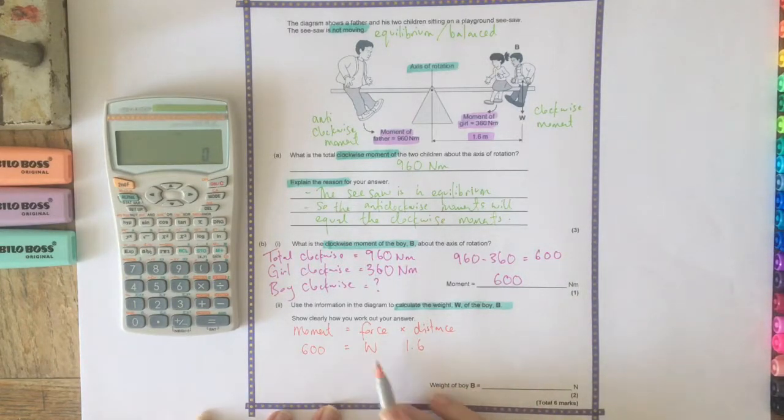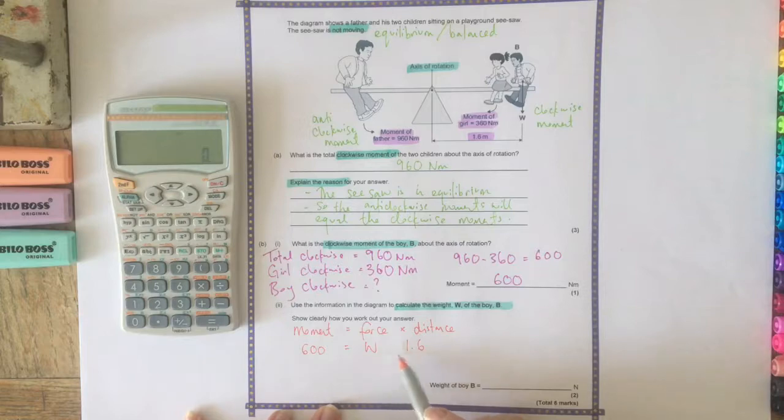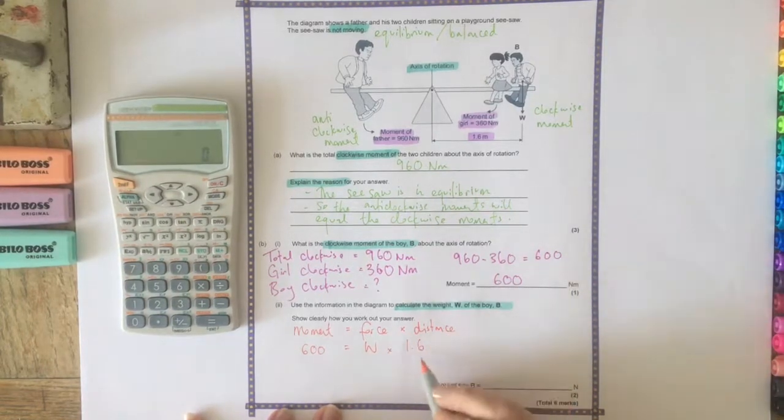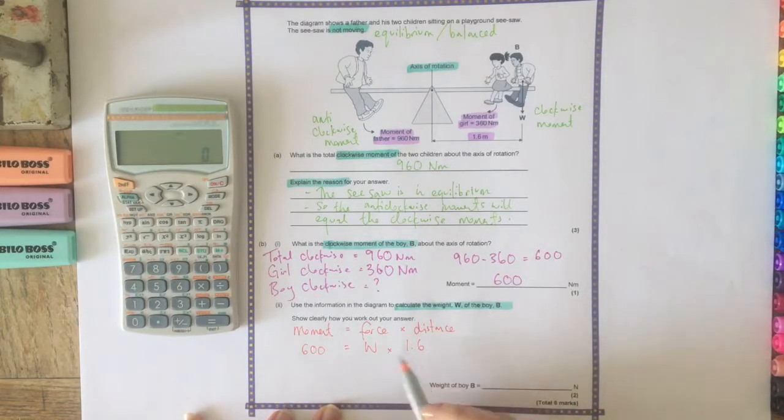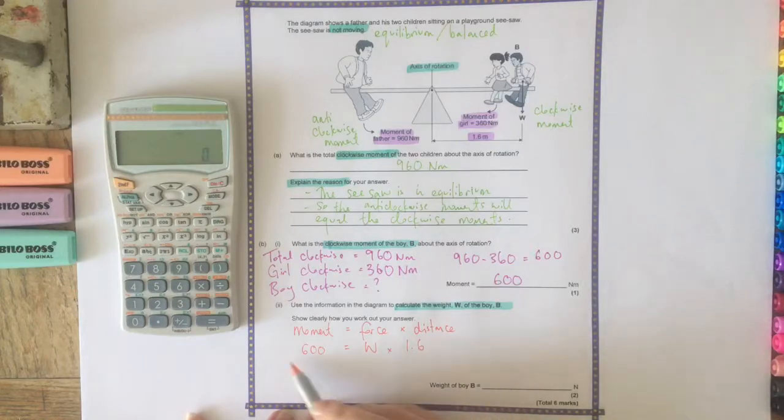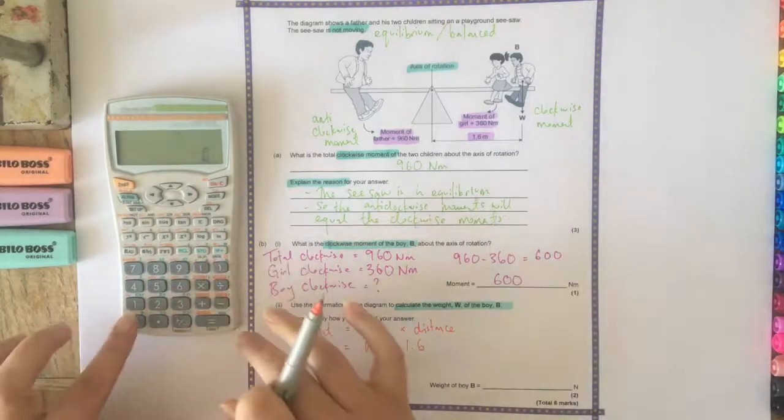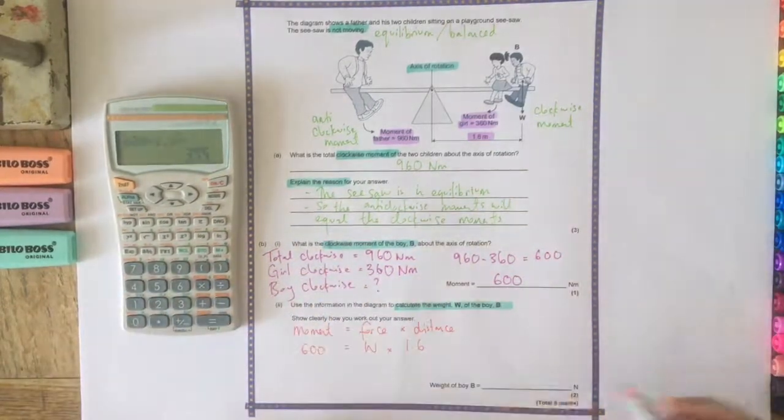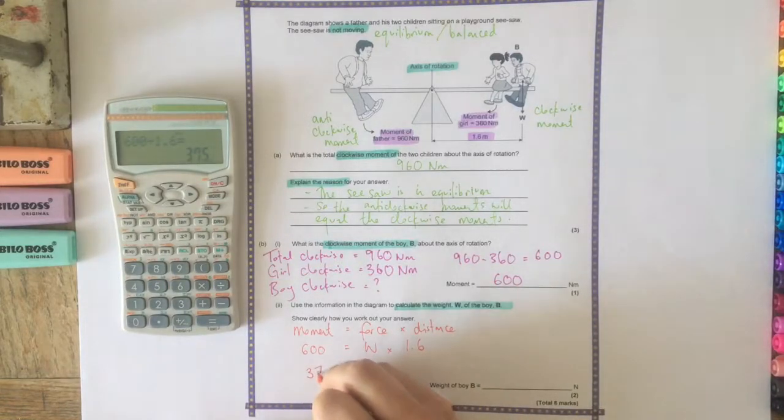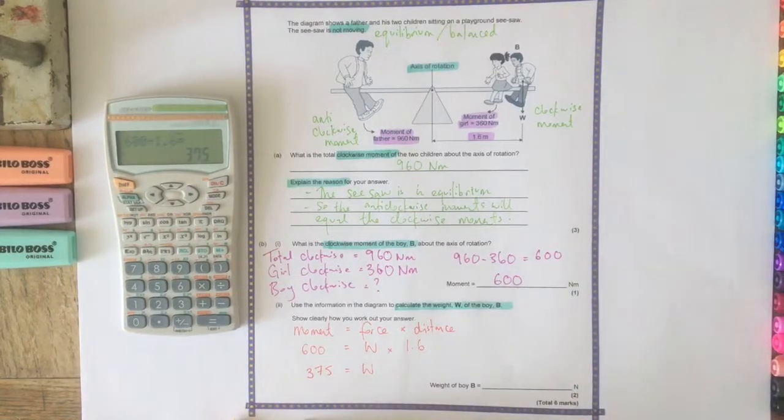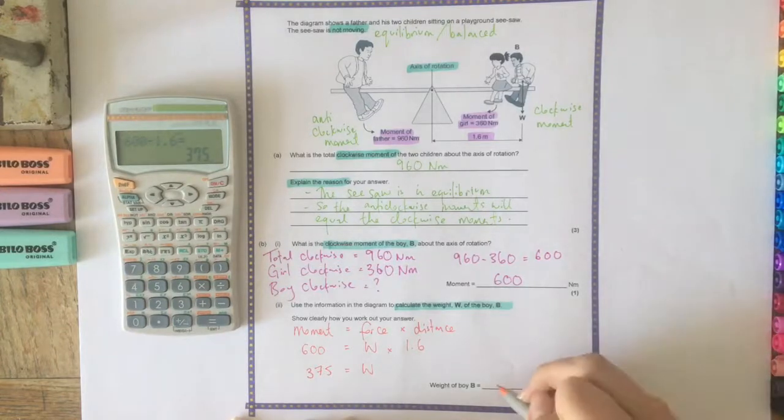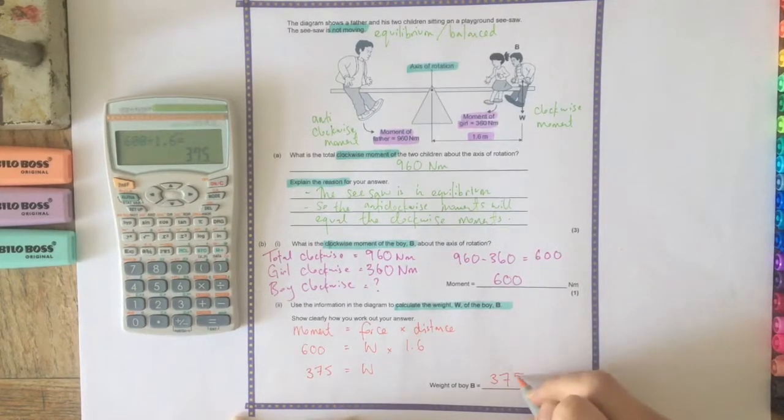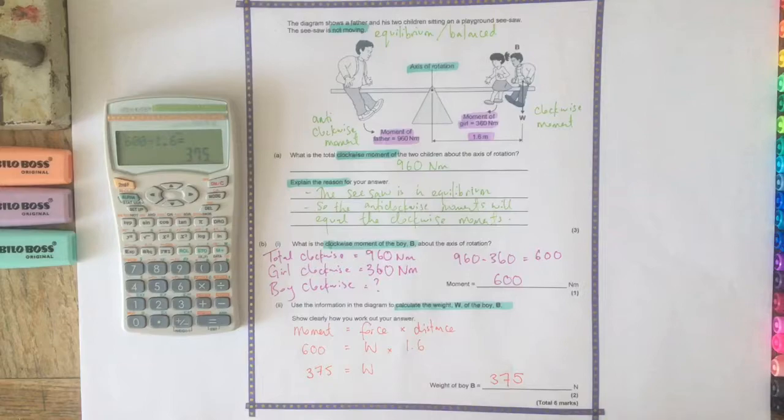We don't want 1.6W, we want W by itself. So we'd need to divide by 1.6. Whatever we do to this side, we need to do to this side. So we'll do 600 divided by 1.6. And this would give us 375 is the boy's weight. So let's write that in here: 375 Newtons.